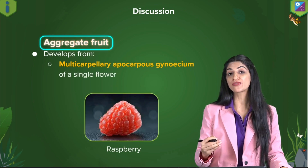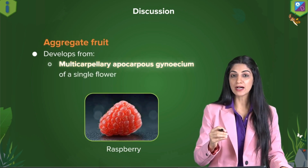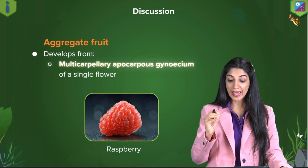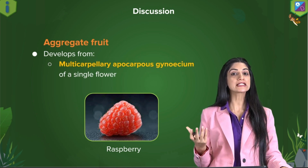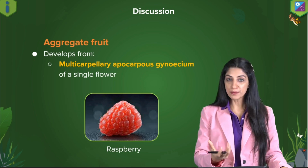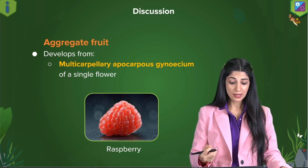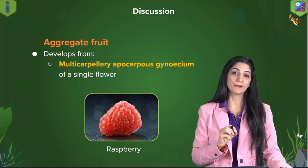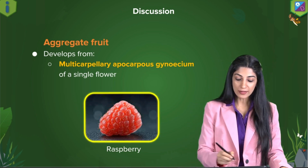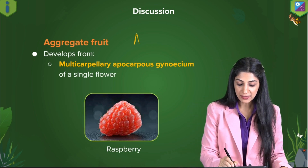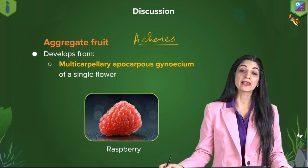Talking about aggregate fruit — it develops from a multicarpellary apocarpous gynoecium. Apocarpous means the carpels are not fused together. The classic example is raspberry; we call the individual fruits achenes here.